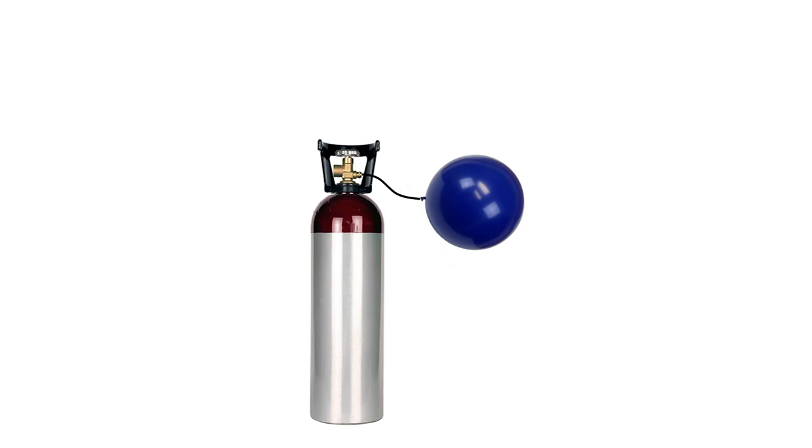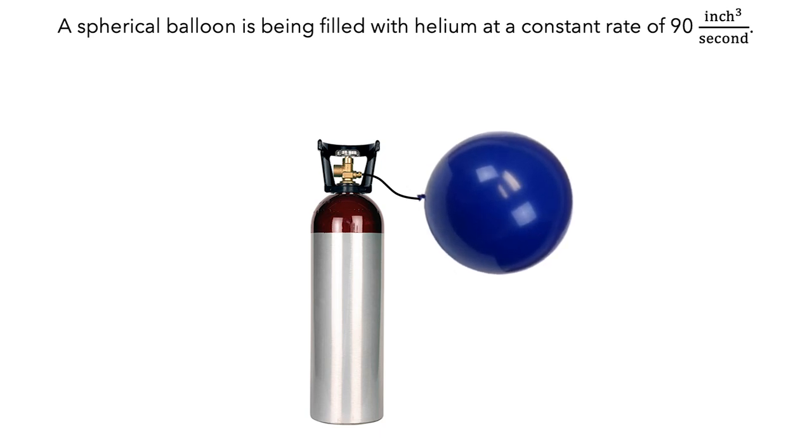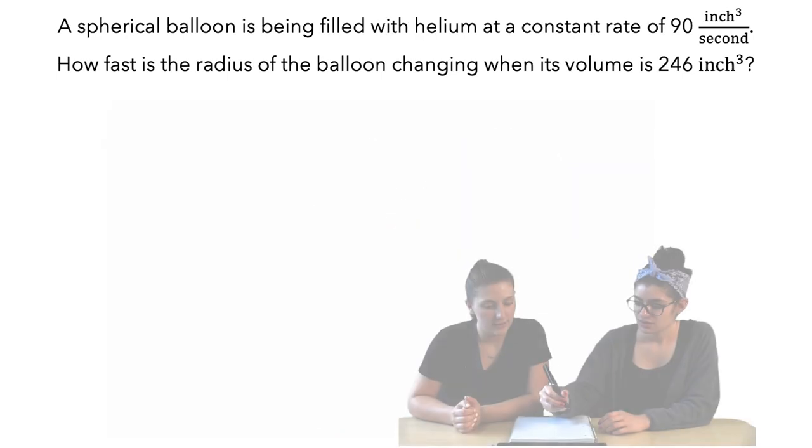In this video, you will see Kelly and Maria working on the following problem. A spherical balloon is being filled with helium at a constant rate of 90 cubic inches per second. How fast is the radius of the balloon changing when its volume is 246 cubic inches? As they work, consider the obstacles they encounter and think about how you might solve the problem.